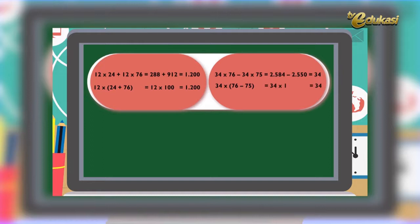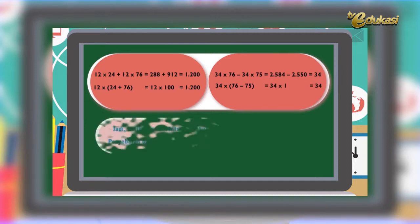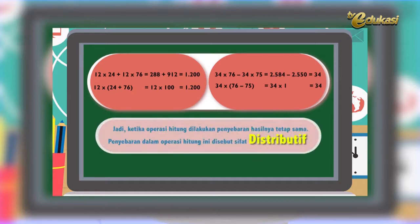Lebih mudah ya anak-anak? Coba, apa kesimpulan operasi hitung tadi? Jadi, ketika operasi hitung dilakukan, penyebaran hasilnya tetap sama. Penyebaran dalam operasi hitung ini disebut sifat distributif.